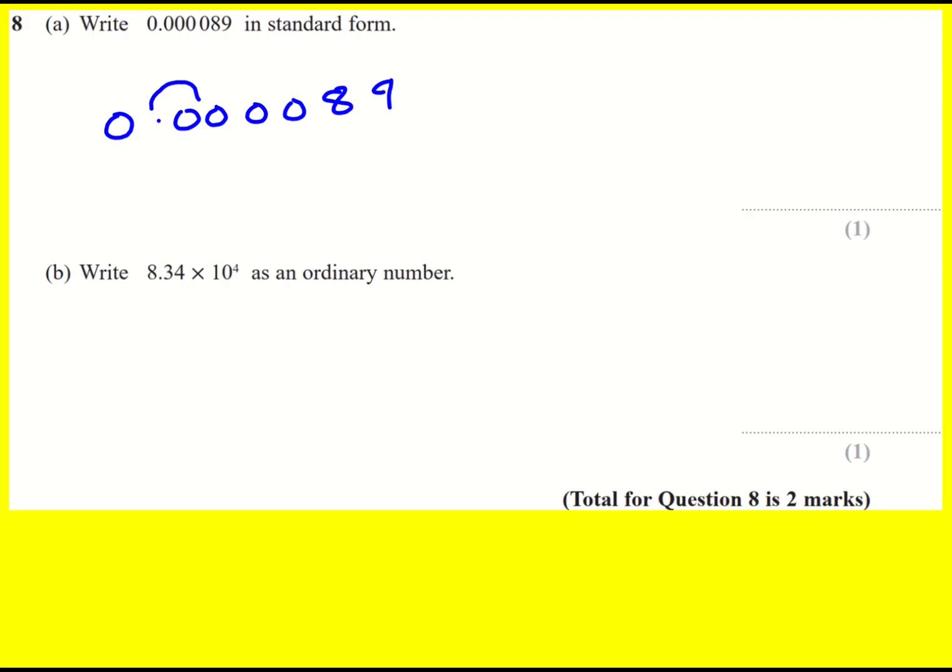So every time you move to the left, you have to compensate by dividing by 10. If I wrote 0.00089, I've actually times that number by 10, so I would have to divide by 10, or times by 10 to the minus 1, which is the same thing. When you learn about standard form, sometimes you'll use negative indices without quite realizing what they are. But we're dividing by 10 every time we move one to the right.